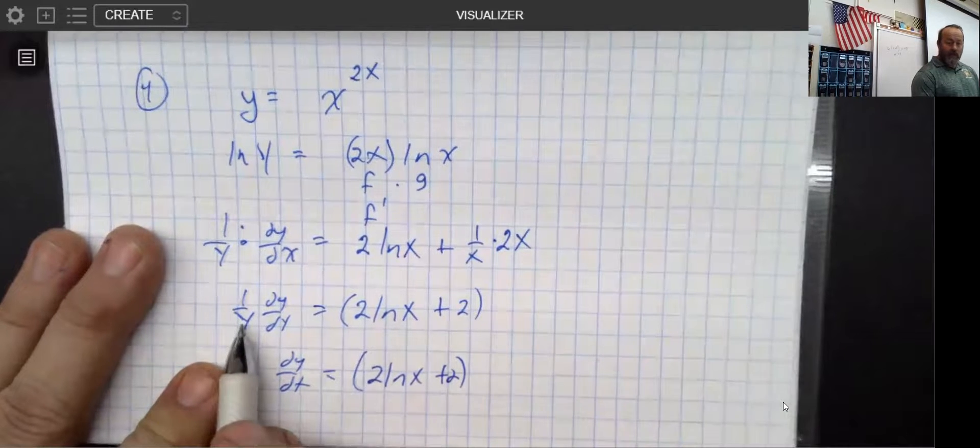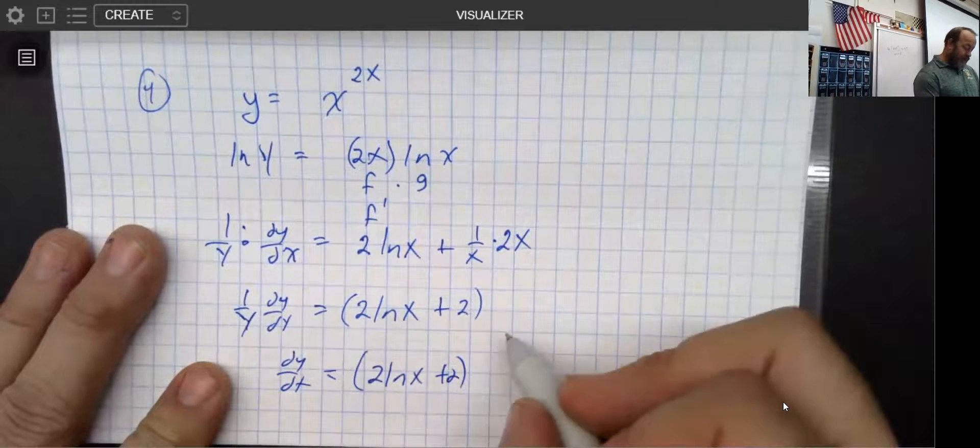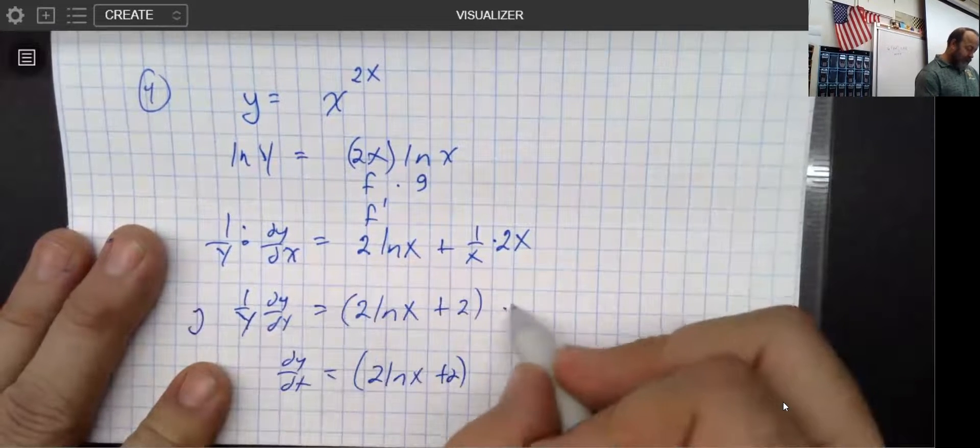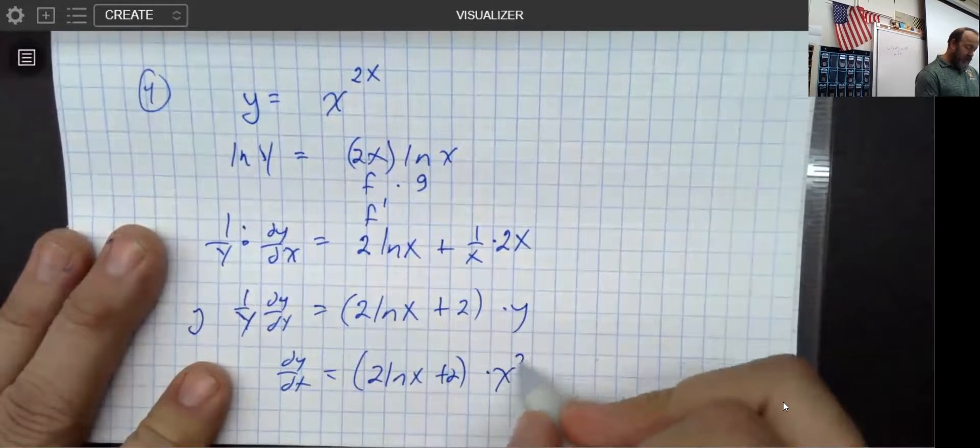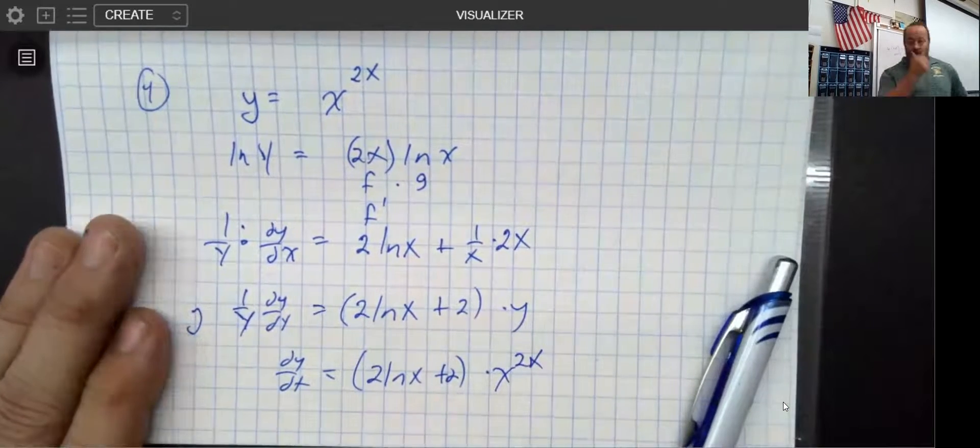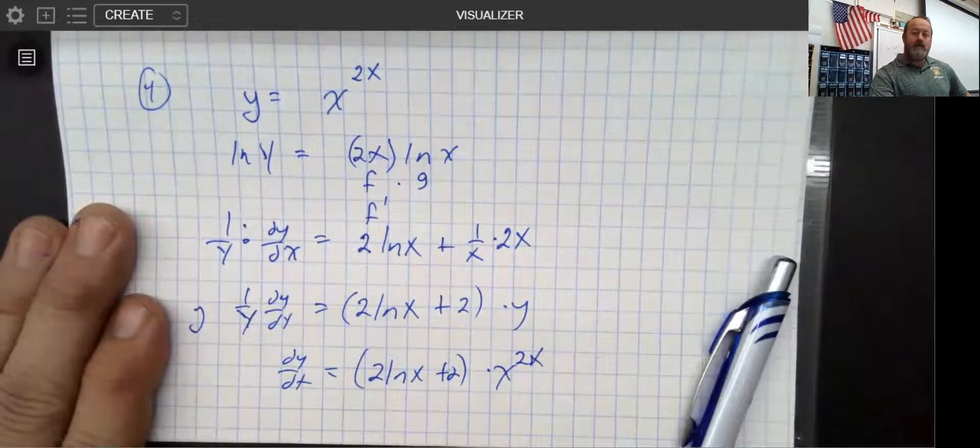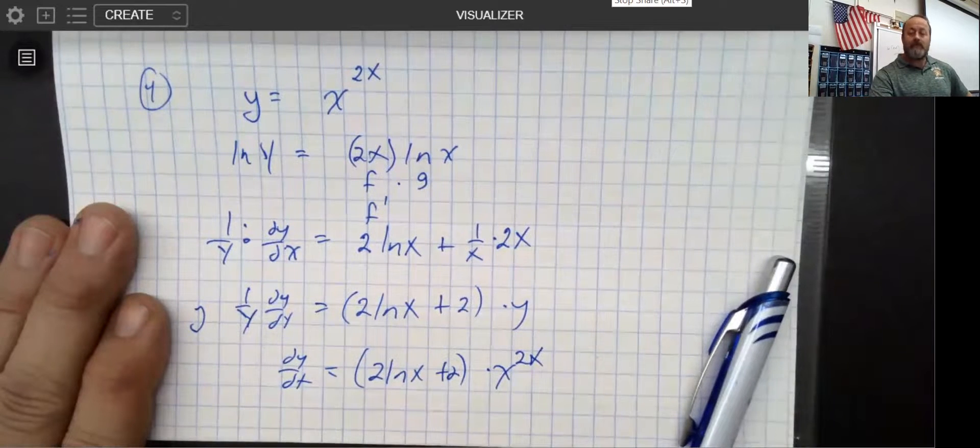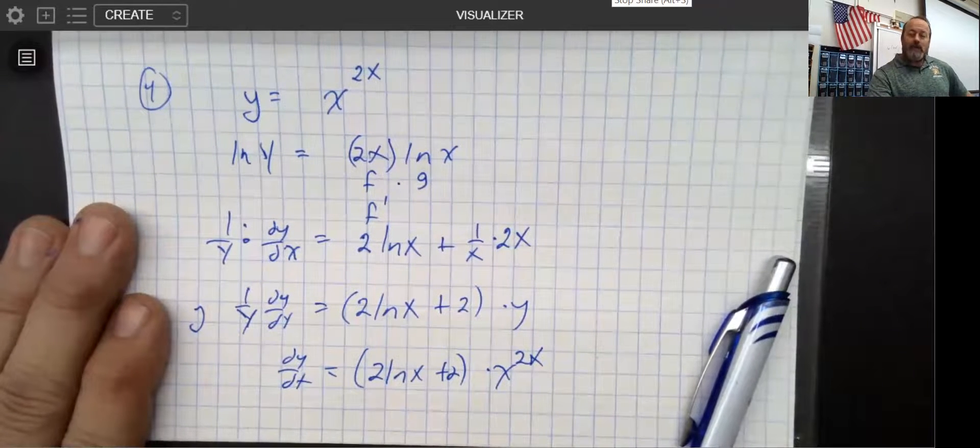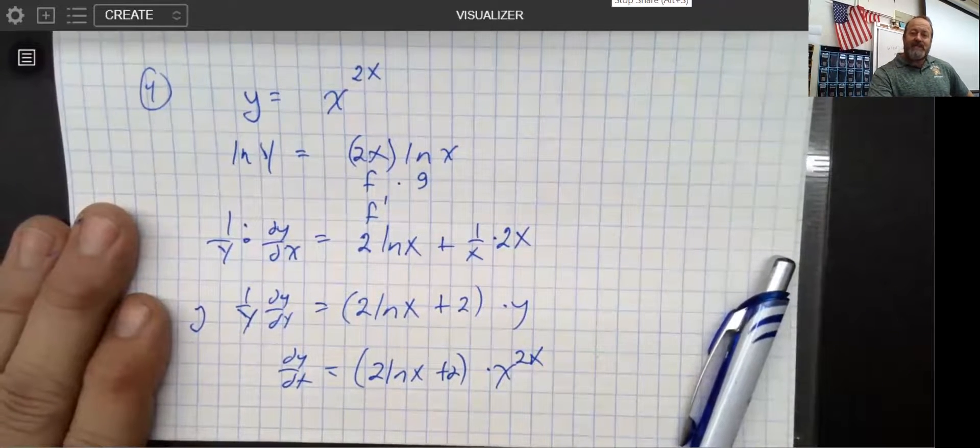Because I'm going to multiply both sides by y. But keep in mind, y, if I put it right here, if I multiply both sides by that y, that y is x to the 2x power. And we're done. We have done the derivative and we use logs as a tool to make our life easier. So I will see you back in class. Hopefully that's helpful.